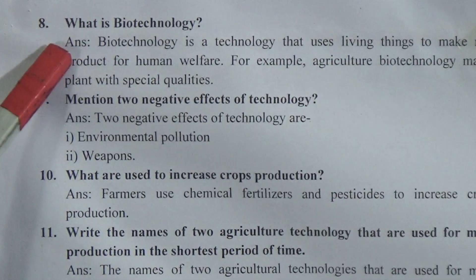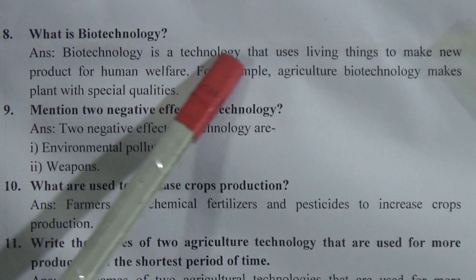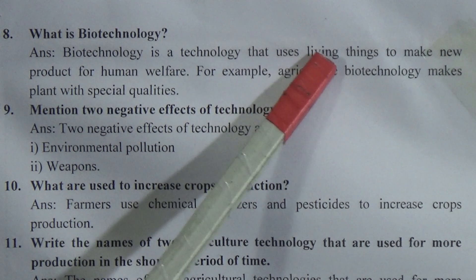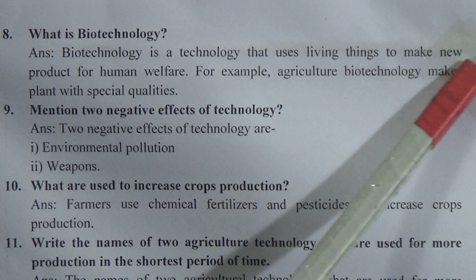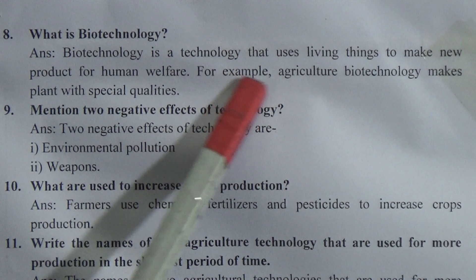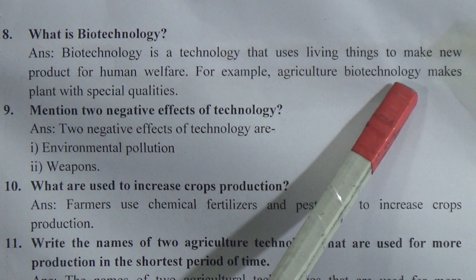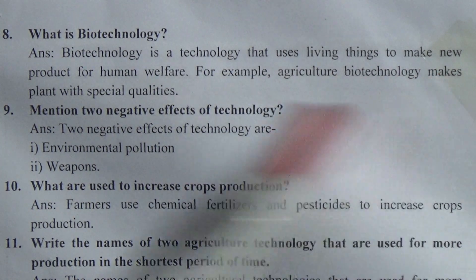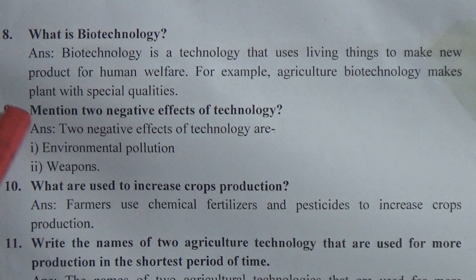Question 8: What is biotechnology? Answer: Biotechnology is a technology that uses living things to make new products for human welfare. For example, agricultural biotechnology makes plants with special qualities.